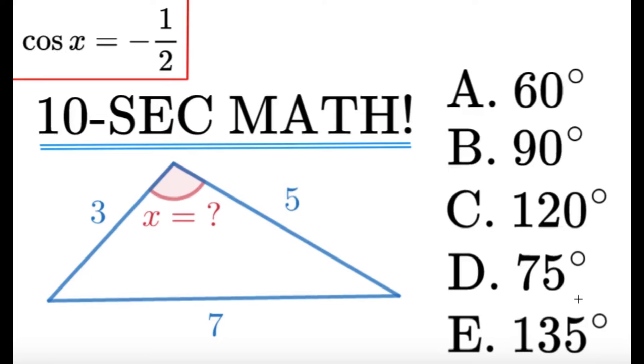Cosine of 75 degrees gives us square root of 6 minus square root of 2 over 4. Cosine of 135 degrees gives us negative square root of 2 over 2. So obviously I just mentioned the correct answer out of the five, it is going to be